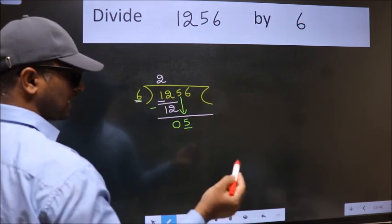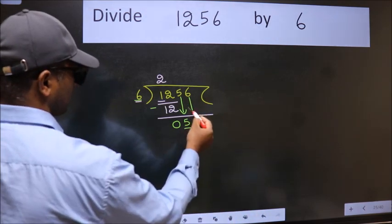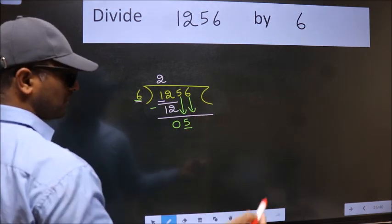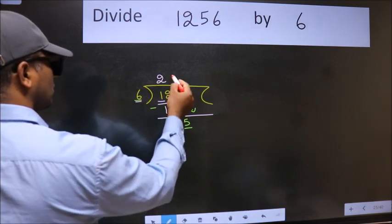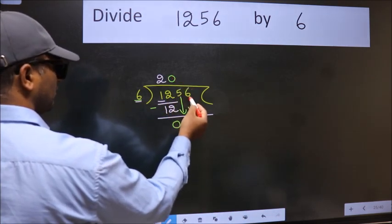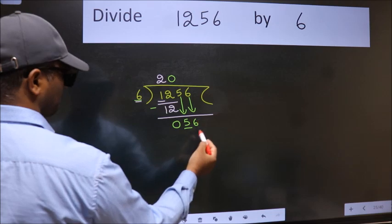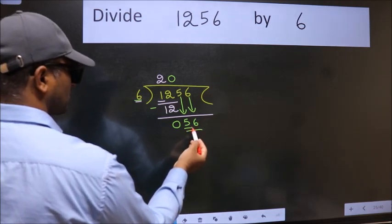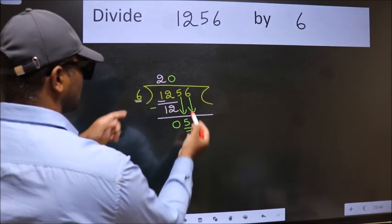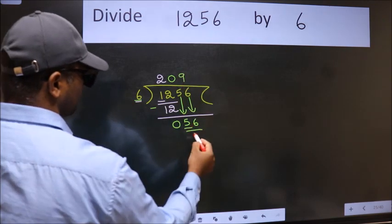So we should bring down the second number. And the rule to bring down second number is put 0 here. Then only we can bring this number down. So, 56. A number close to 56 in 6 table is 6 nines, 54.